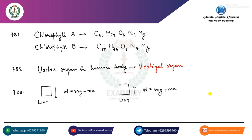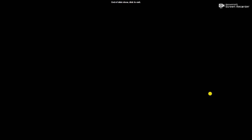Chlorophyll A और Chlorophyll B में C55, N4, Mg same होता है। Chlorophyll A में H72, O5 होता है और Chlorophyll B में H72, O6 होता है। Useless organ in human body: Vestigial organ. Lift जब नीचे जाता है तो W = Mg - Ma, और जब ऊपर जाता है तो W = Mg + Ma. See you in the next video. Bye.